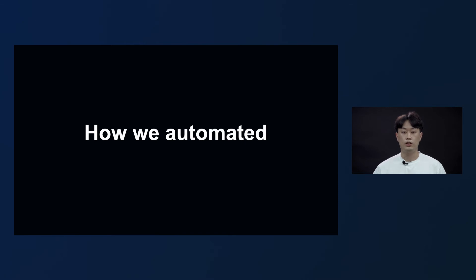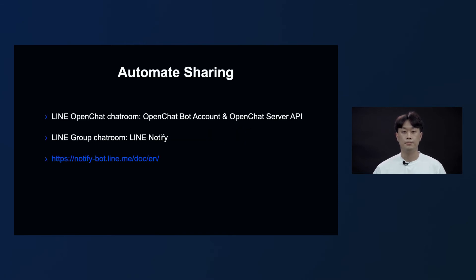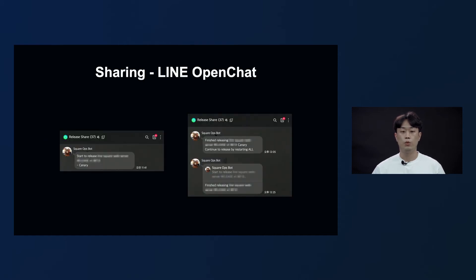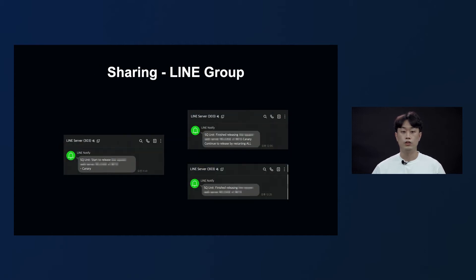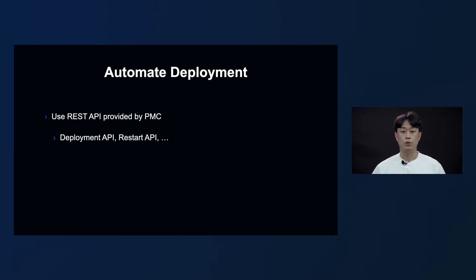From this moment, I will explain how we automated each part. First is about automating sharing. For Line OpenChat, we used a virtual account created by our team and the OpenChat Server messaging API. For Line Group chat room, we used the Line Notify feature provided by Line to automate message sending. This is how we shared the beginning and the end of the release on Line OpenChat using the bot that we created, and this is sharing in the Line Group chat room using Line Notify.